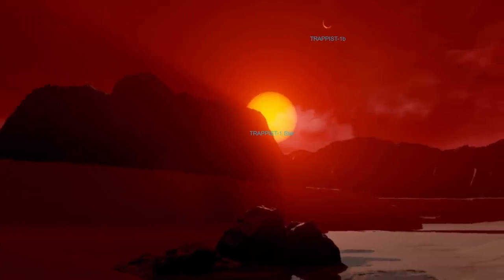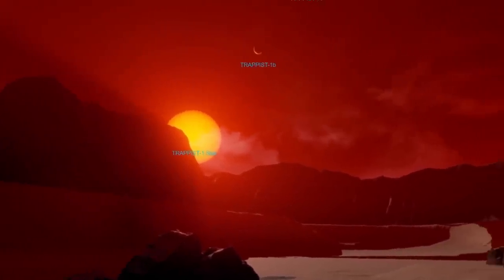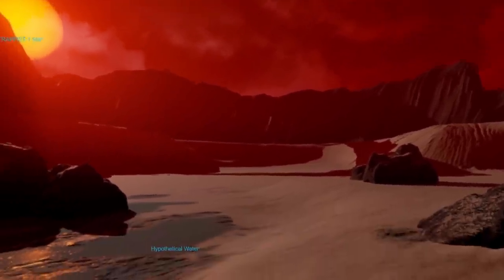And so what does all of this mean? Let's jump onto the hypothetical surface of a Trappist-1 planet and briefly talk about the implications. So this is what it might actually look like on the surface here.